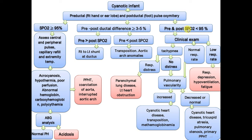If both pre- and post-ductal SpO2 are less than 95%, perform clinical examination. If there is low respiratory rate, respiratory depression, hypoventilation, or fatigue, consider CNS causes. If there is normal respiratory rate or tachypnea with respiratory distress, this suggests parenchymal lung disease or left heart obstruction with acidosis. If there is no distress or normal respiratory rate, assess pulmonary vascularity on X-ray. If increased, consider cyanotic heart disease such as transposition of the great arteries or methemoglobinemia. If normal or decreased, consider cyanotic heart disease such as tricuspid atresia, pulmonary stenosis, or primary persistent pulmonary hypertension.